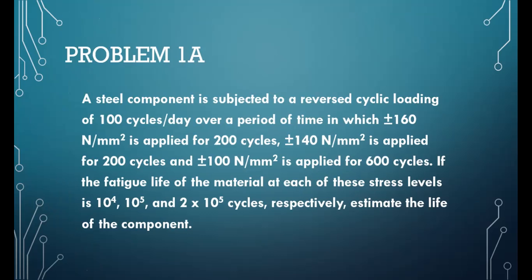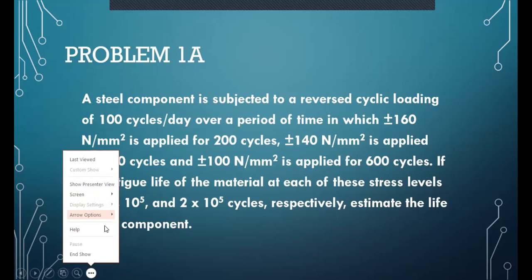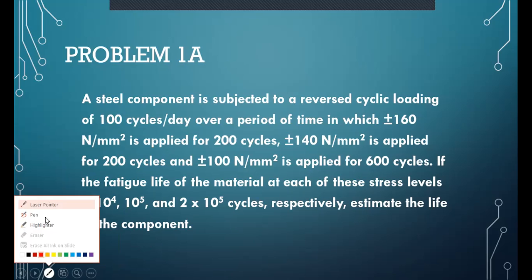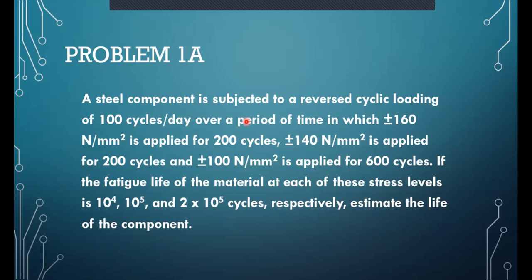This is our first problem. There is a steel component which is undergoing reverse cyclic loading. Per day it is undergoing 100 cycles, and in a period of time it will be subjected to 160 Newton per millimeter square load for 200 cycles, 140 Newton per millimeter square load for 200 cycles, and 100 Newton per millimeter square applied for 600 cycles.